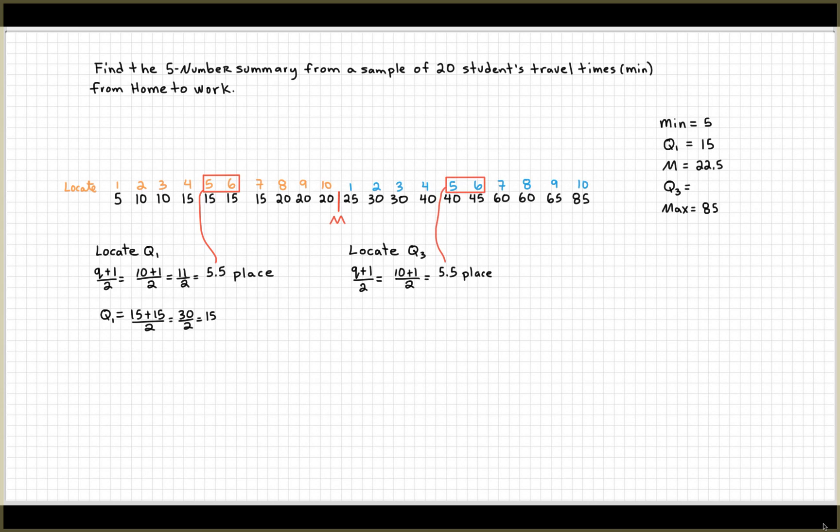That means I'm going to look at Q3 using these two pieces of data. I'm going to take 40 plus 45 divided by 2, which is 42.5, and that's the data that I need.